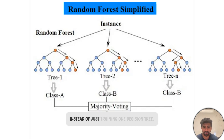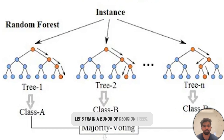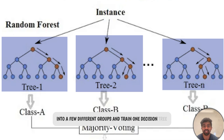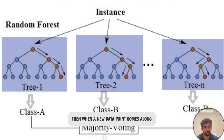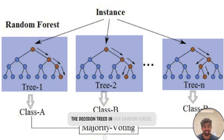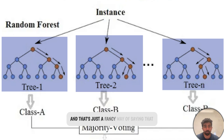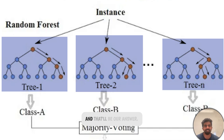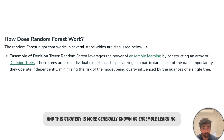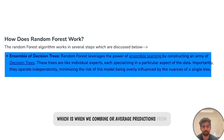Next up is random forests. Instead of training just one decision tree, let's train a bunch of decision trees. We take our starting dataset, randomly split it into a few different groups, and train one decision tree on each group — that makes up the random forest. When a new data point comes along, we pass it through all the decision trees and use a majority vote to determine the model's prediction — whatever prediction was most common from all the trees is our answer. This strategy is more generally known as ensemble learning, which is when we combine or average predictions from multiple models to get a more accurate result.